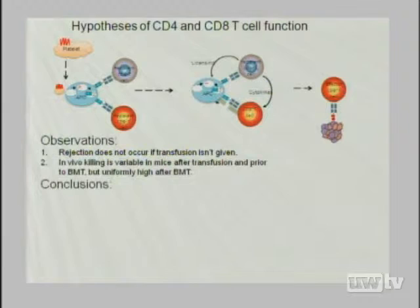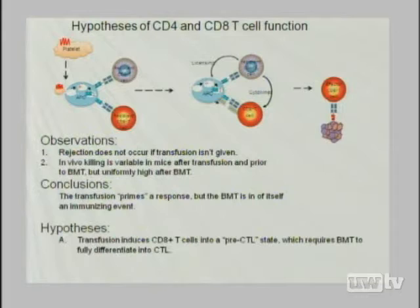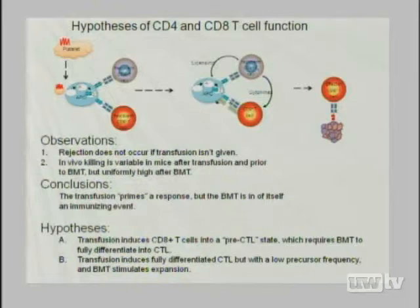One might hypothesize that the transfusion primes a response, but the BMT is the real immunizing event. The hypotheses are: one, the transfusion induces CD8 cells into a pseudo-effector state where they're pre-CTLs — partially differentiated — and then the bone marrow transplant pushes them to full effector state. Alternatively, it's simply a numbers game and the transfusion gives you mature CTLs but at too low a precursor frequency. I favor the former hypothesis because no matter how many transfusions we give, we always need the bone marrow transplant to get rid of the CD4 T-cell dependence.